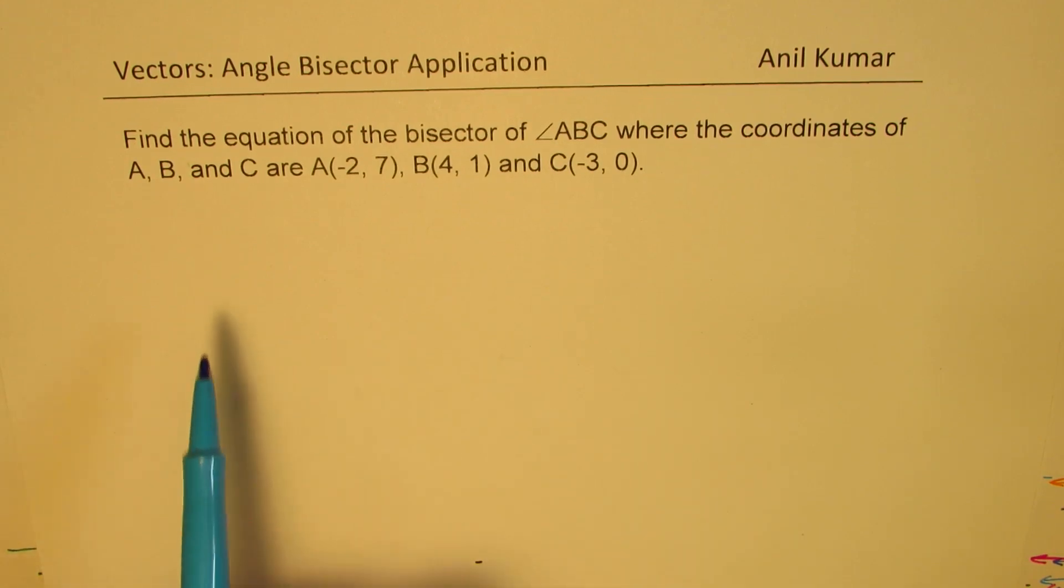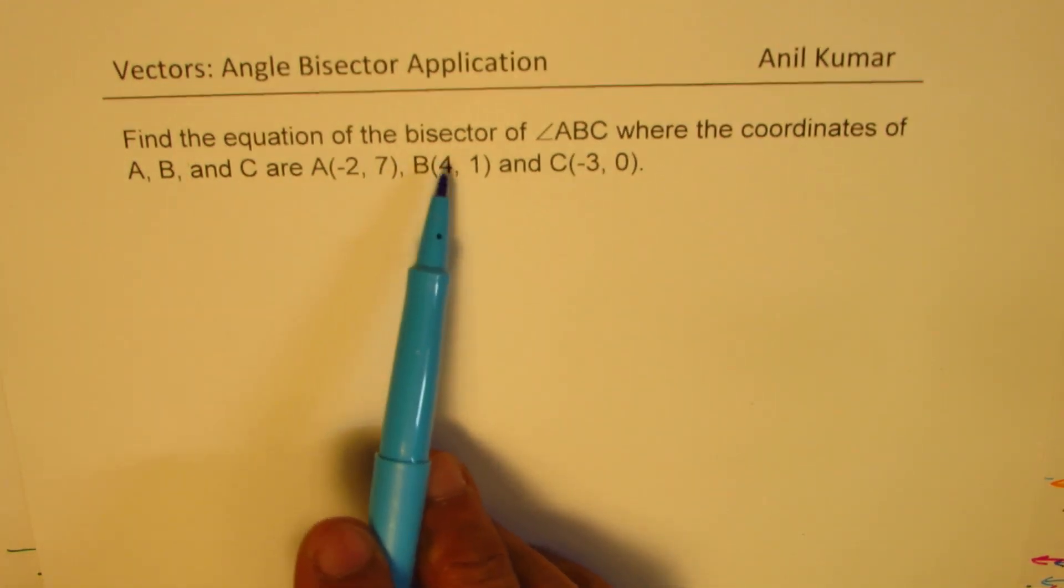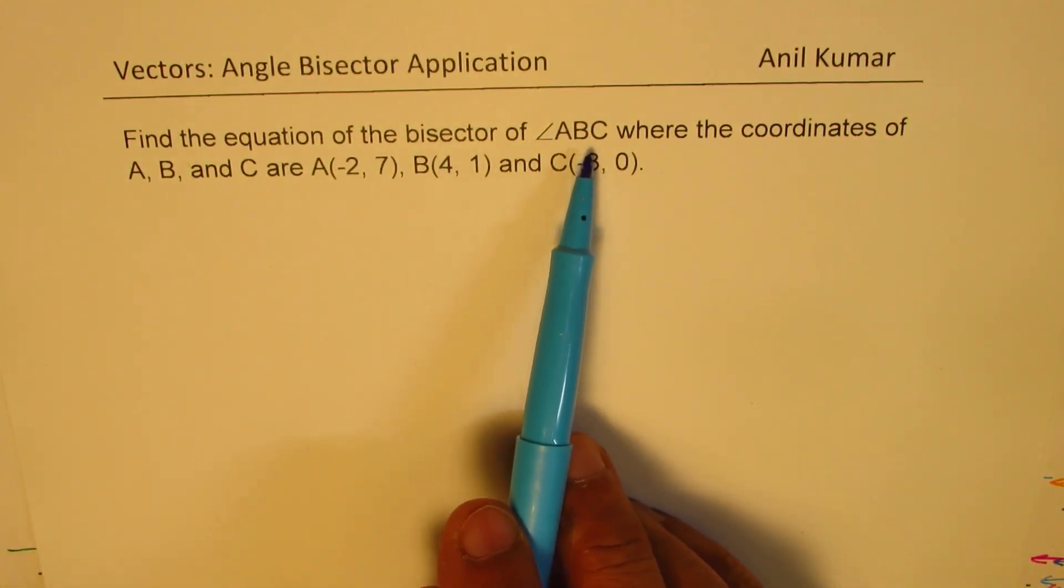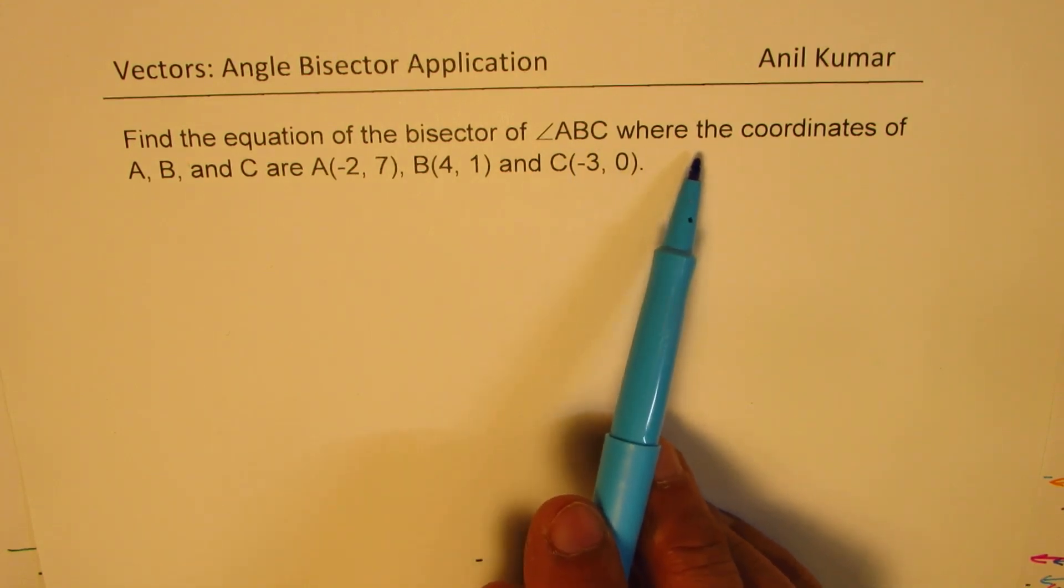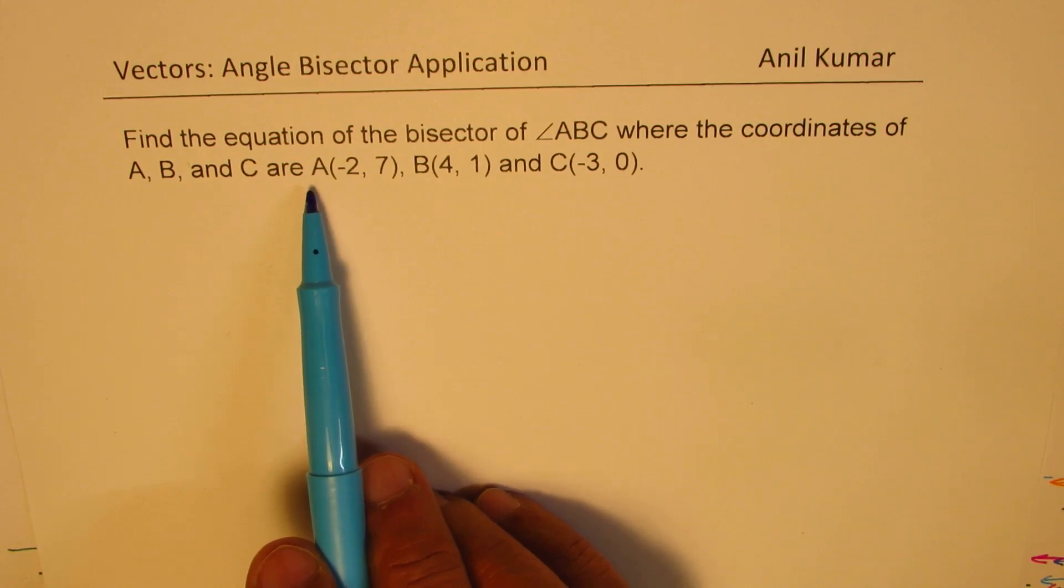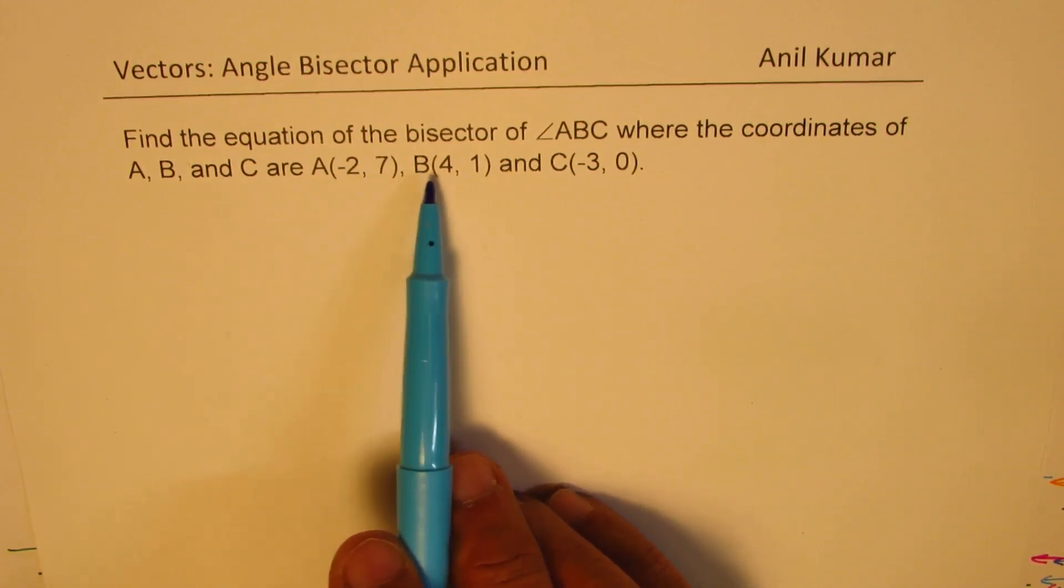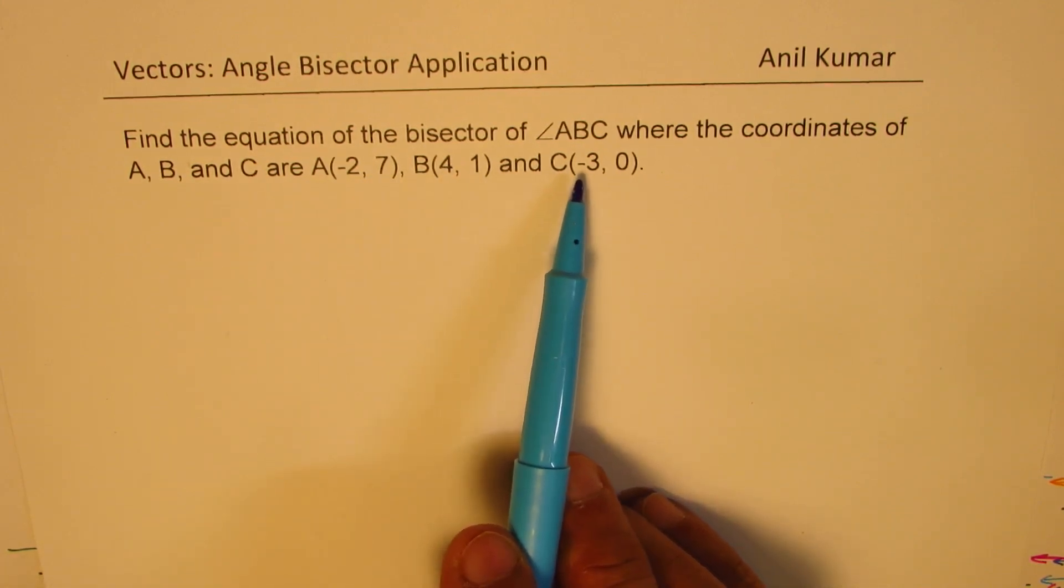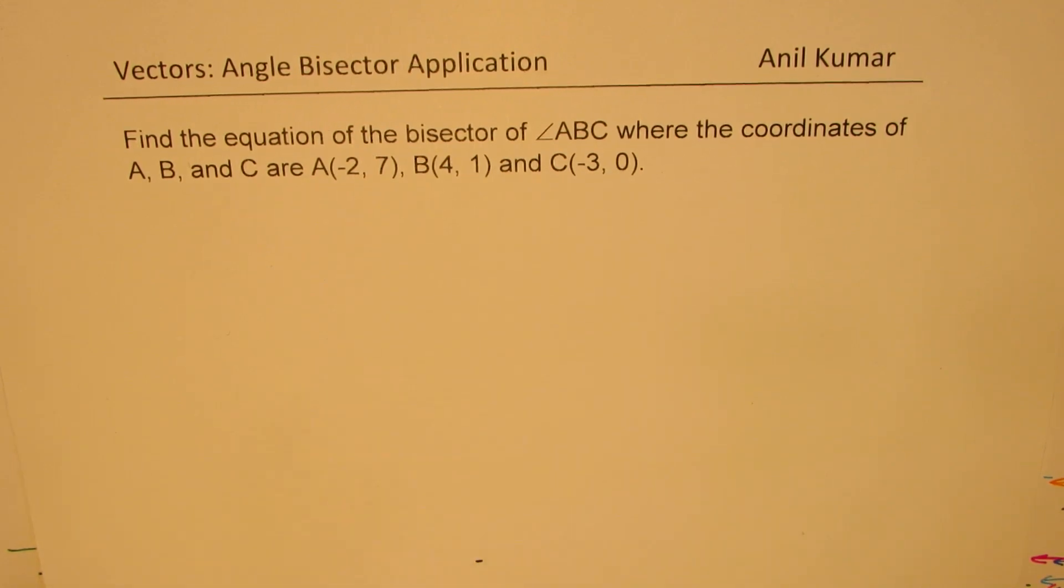The question here is, find the equation of the bisector of angle ABC, where the coordinates of A, B, and C are A(-2, 7), B(4, 1), and C(-3, 0). You can always pause the video, answer the question, and then look into my solutions.